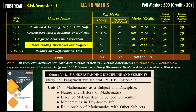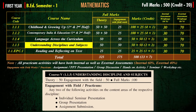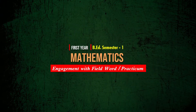For the theory part, you can buy Understanding Disciplines and Subjects from Ahili Publication or Rita Publication. You can also collect the same titled book from Neil Kamal Publication. In engagement with fieldwork and practicum, you have to do any two of the following activities on the content areas of the respective discipline: individual seminar presentation, group presentation, and assignment submission.